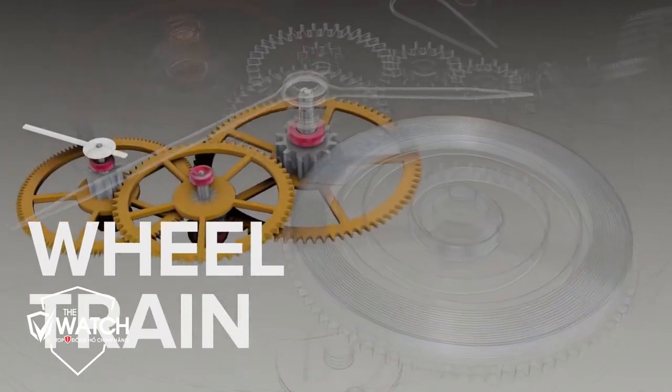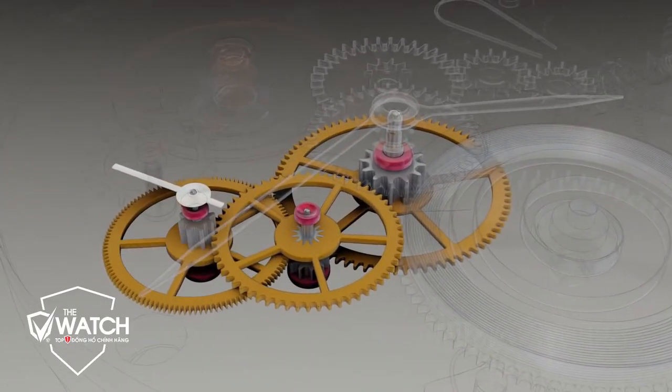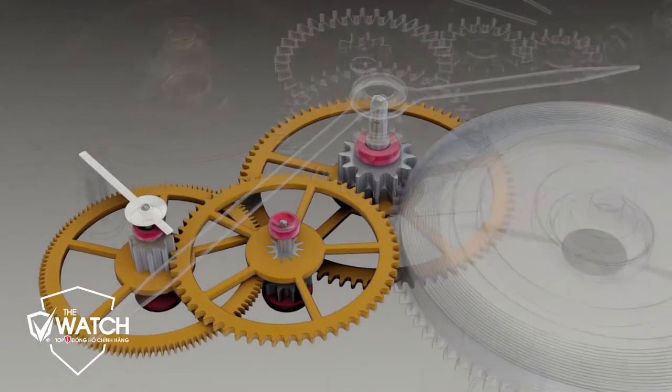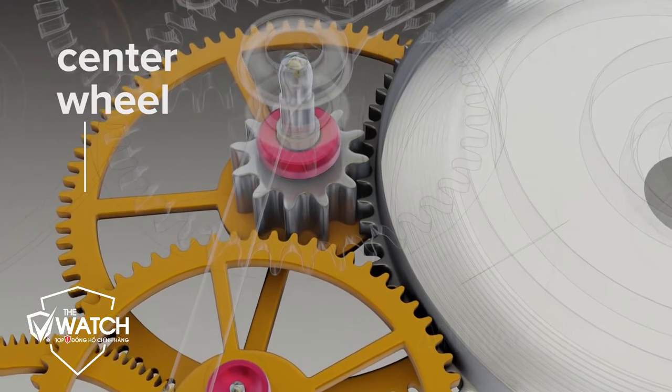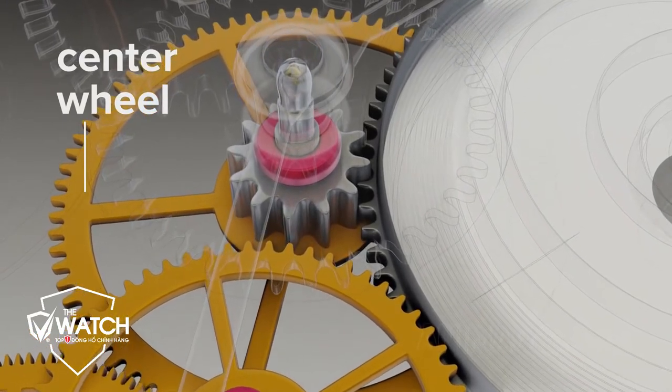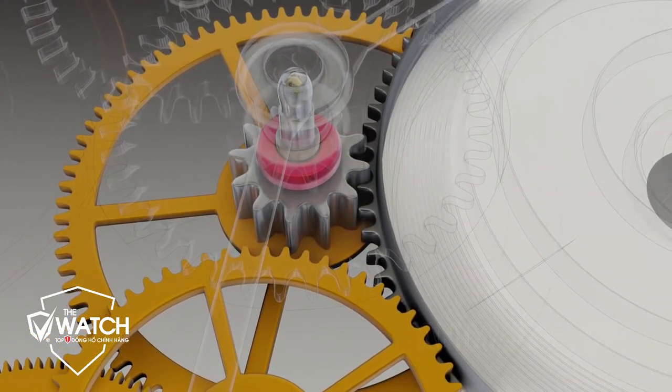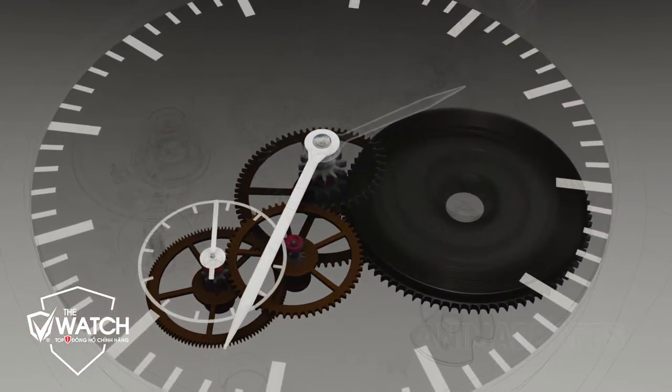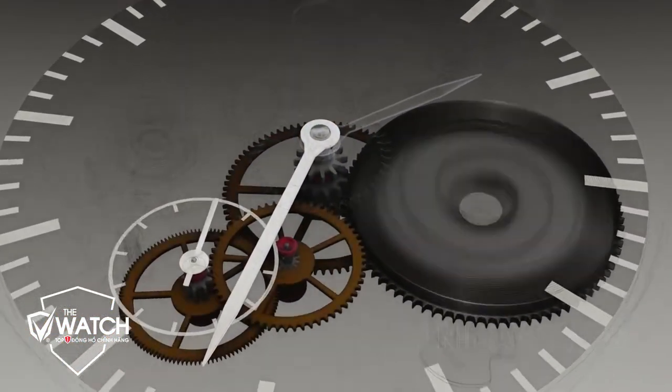The wheel train. The wheel train drives timekeeping hands and associated wheels. The center wheel is driven by the mainspring barrel and rotates once per hour. It holds the minute hand and its 60-minute journey is often divided up into minute marks on the watch face.